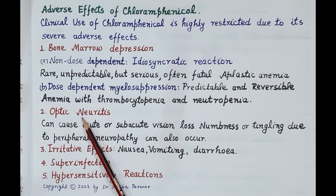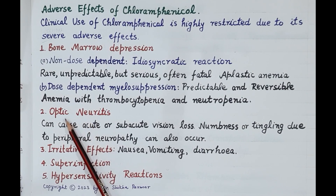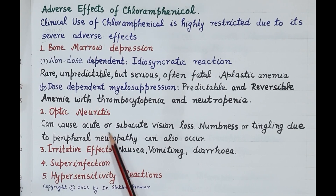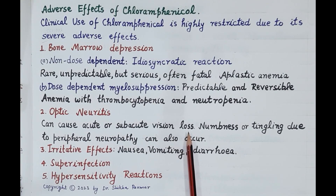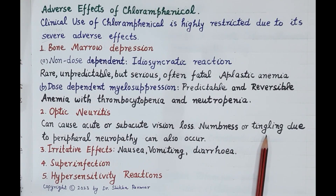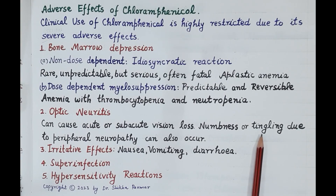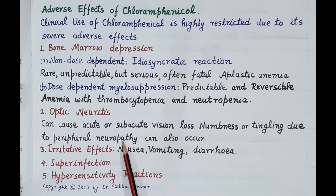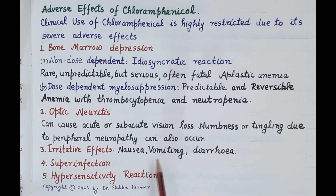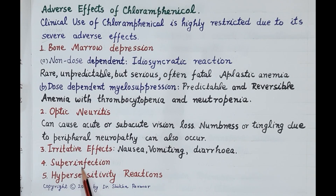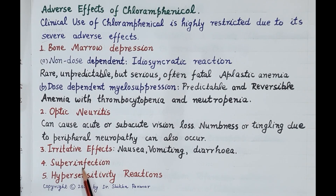Another adverse effect is optic neuritis — inflammation of the optic nerve — which can cause acute or subacute loss of vision. Numbness, tingling, or prickling sensation can occur due to peripheral neuropathy. Chloramphenicol can also cause irritative effects like nausea, vomiting, and diarrhea. As a broad-spectrum antibiotic, it can cause superinfection — growth of opportunistic organisms — which can also result in diarrhea. Hypersensitivity reactions may also occur.